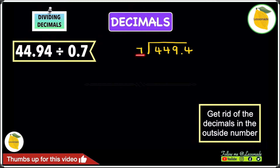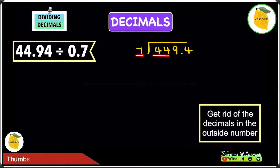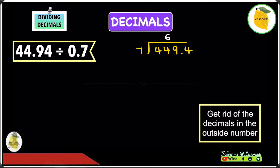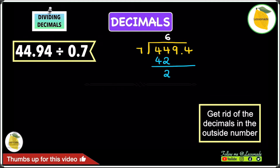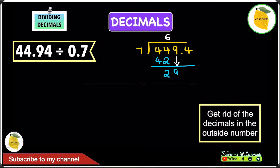Does 7 go into 4? It does not. So let's move to the next digit — does 7 go into 44? Yes, it does. 7 goes 6 times into 44 because 7 times 6 is 42. Now subtract: 44 minus 42 is 2. Next, bring the 9 down next to the 2 to get 29.